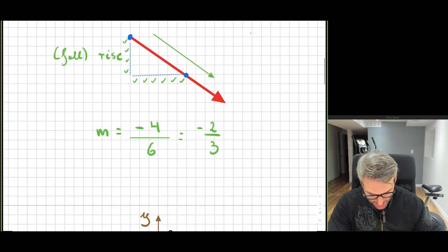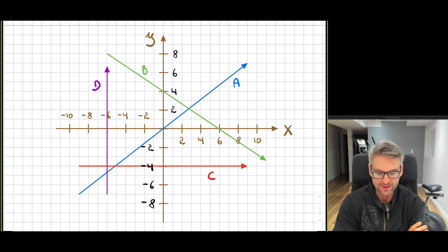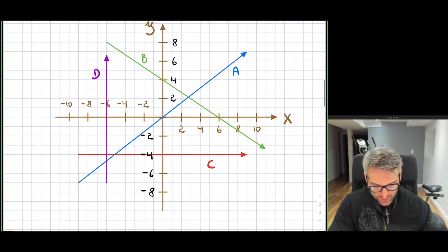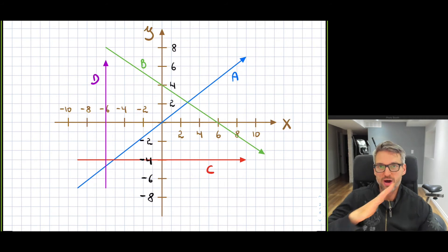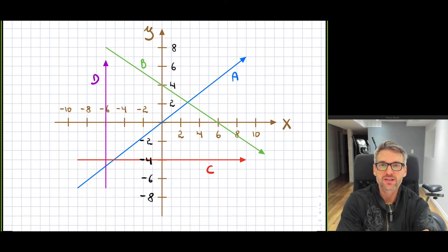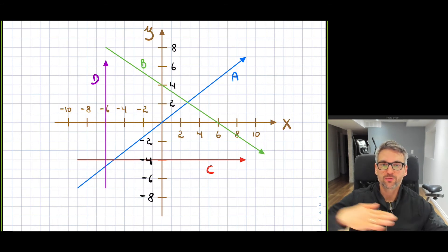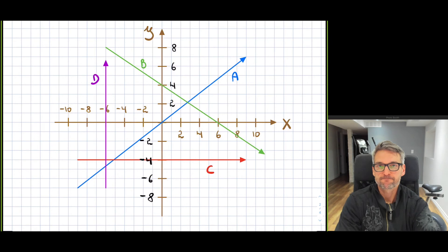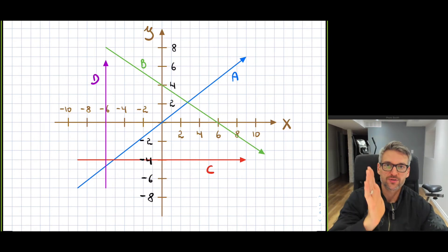I've prepared here four different lines, and we can quickly tell what each slope is. Line A is rising, so that slope is positive. The green line B is falling, so that has a negative slope. C, the red one, is flat — that has a slope of zero because there is no steepness at all. And then the vertical one is undefined — it doesn't have a slope because it is a vertical line.